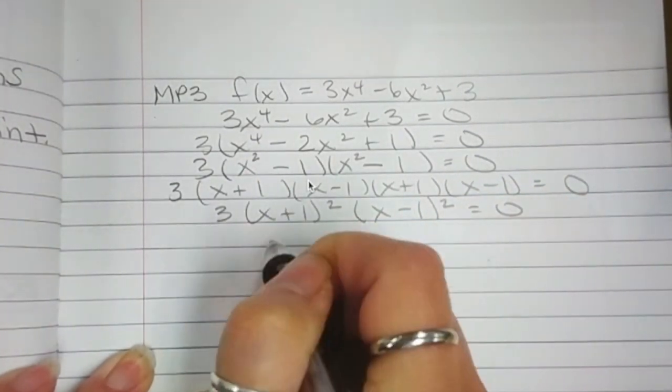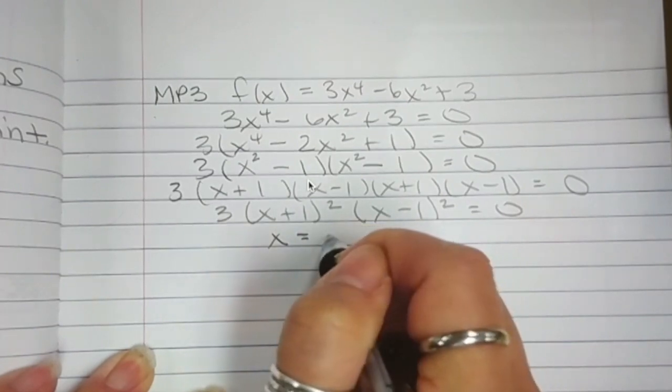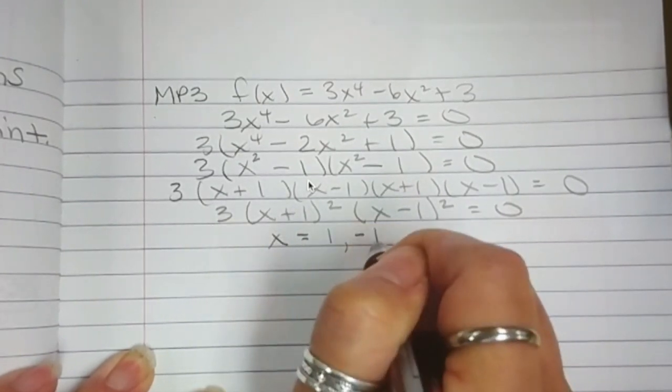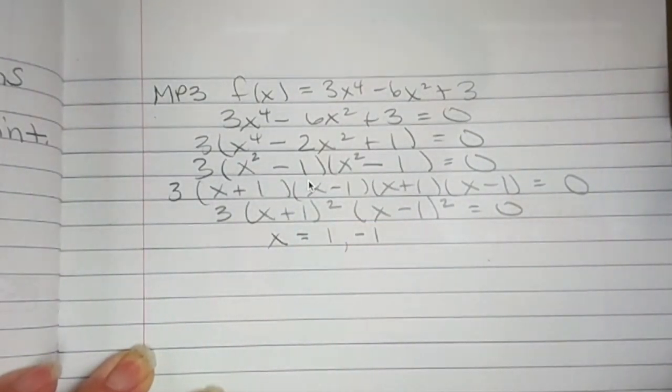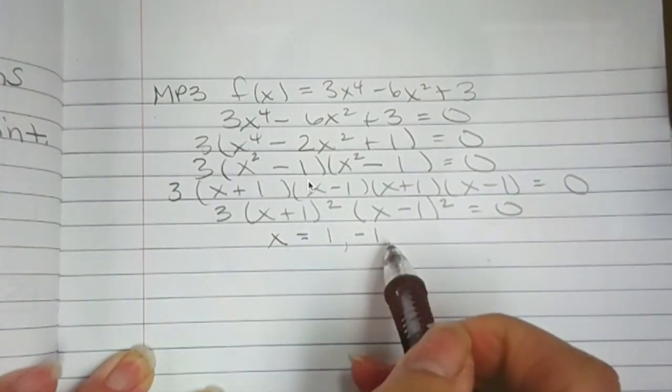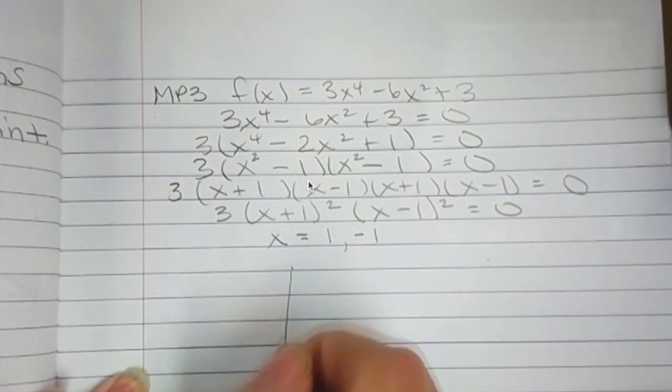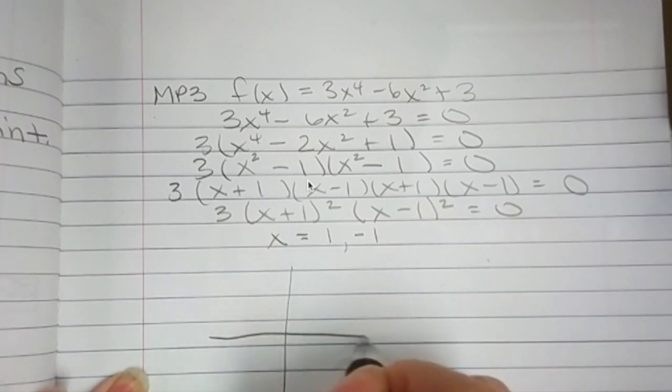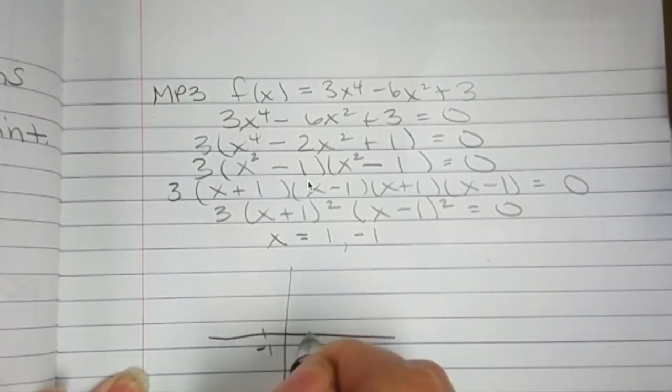Okay. So, what are my roots? X is going to be? 1 and? Negative. Negative 1. But you have to remember, there's two of each of those. Okay. So, let's do our little graph here. At negative 1 and at 1.